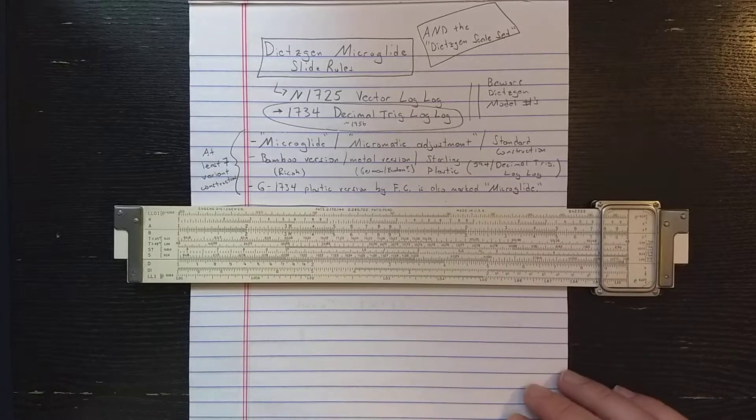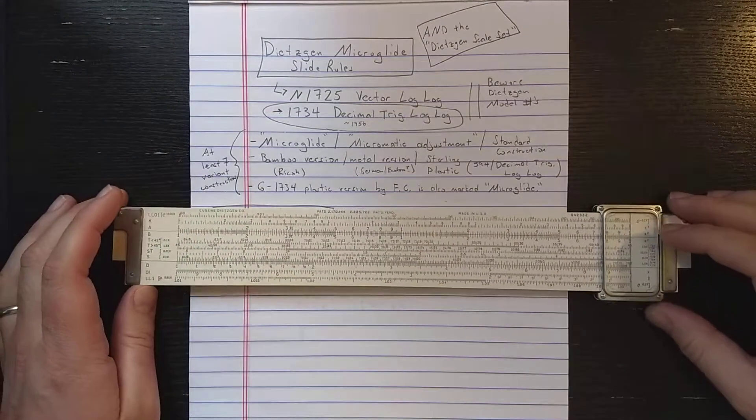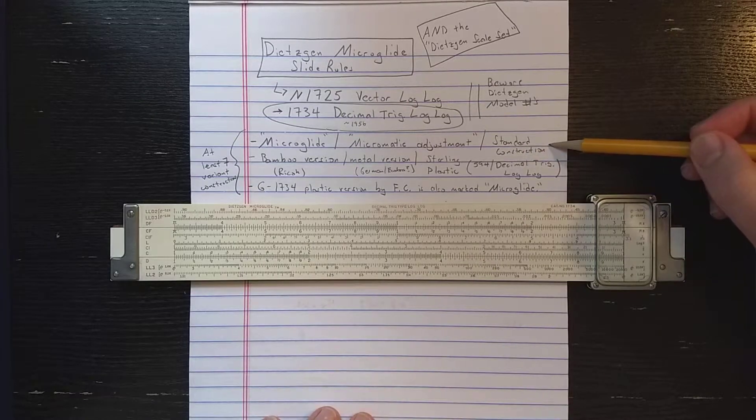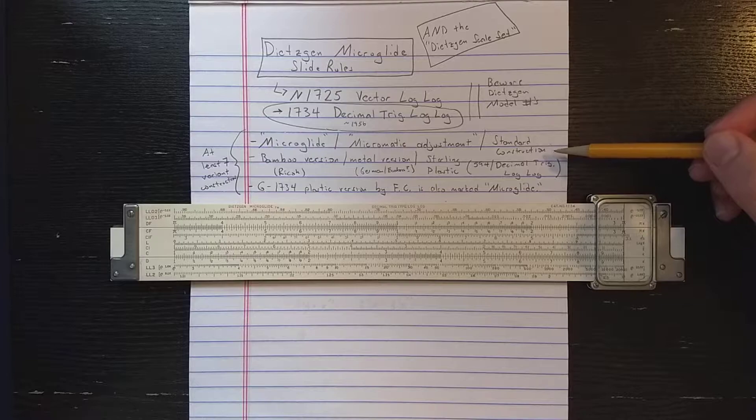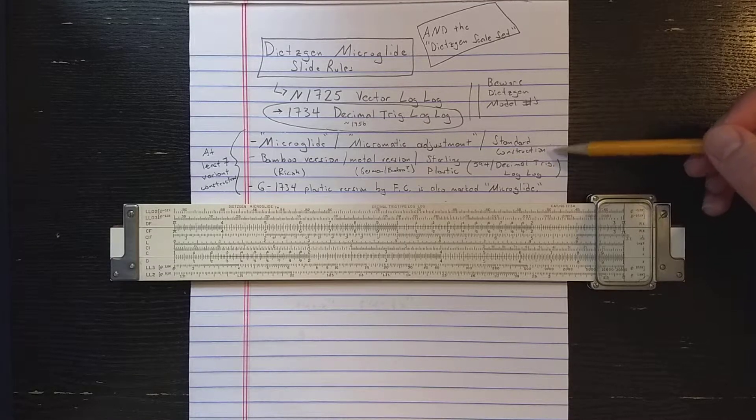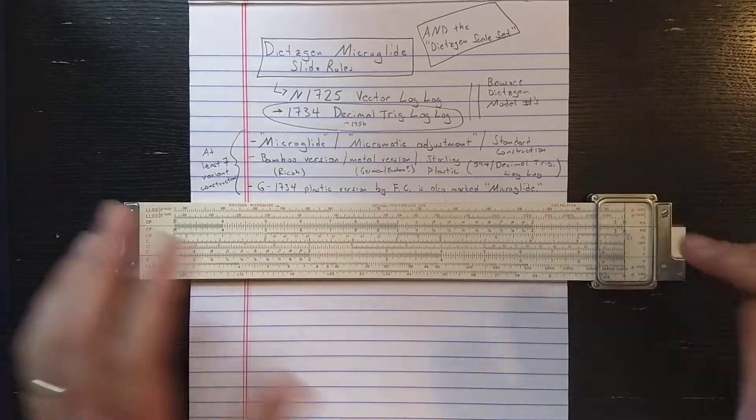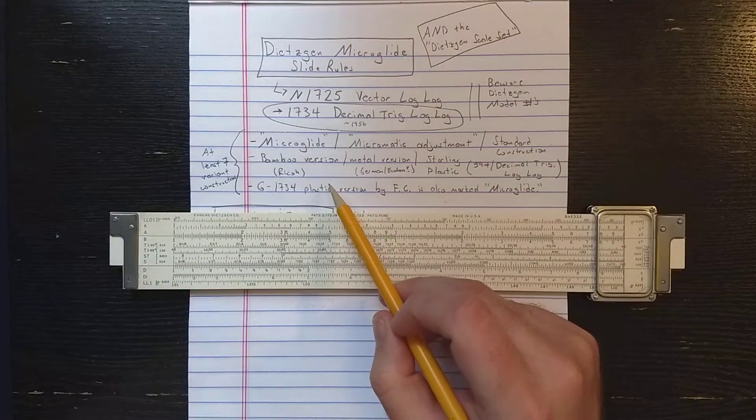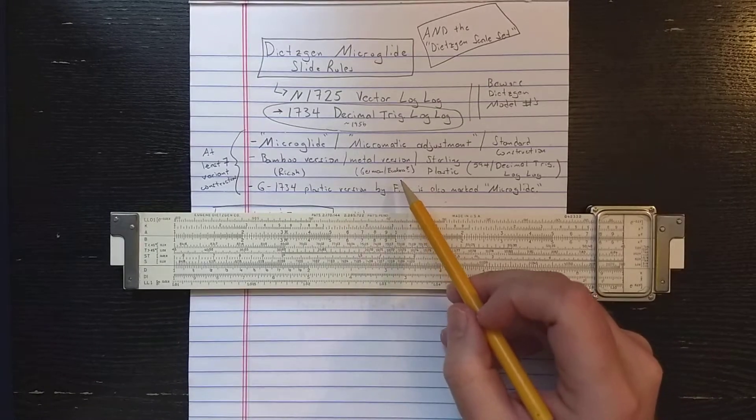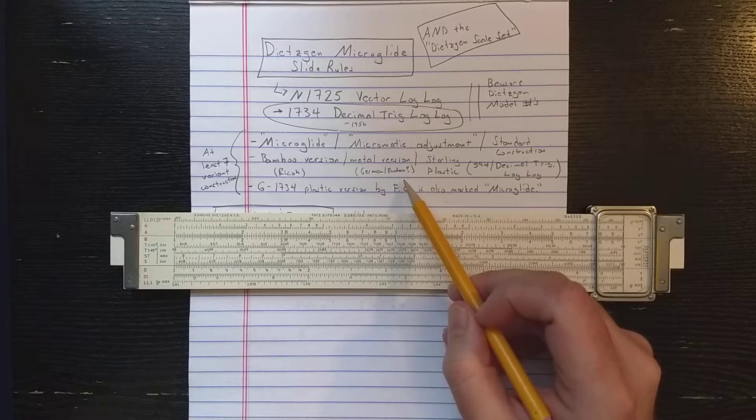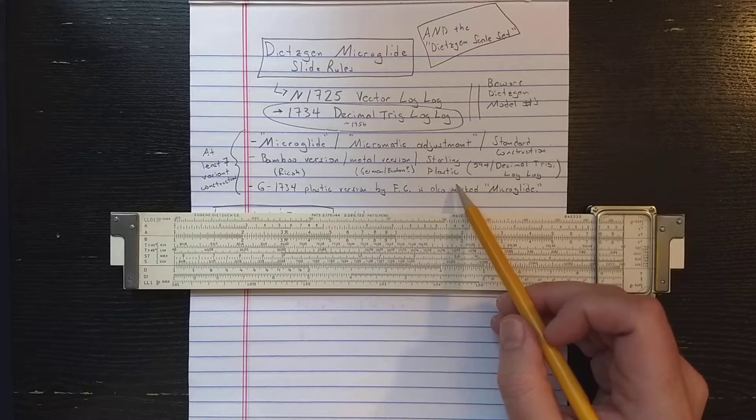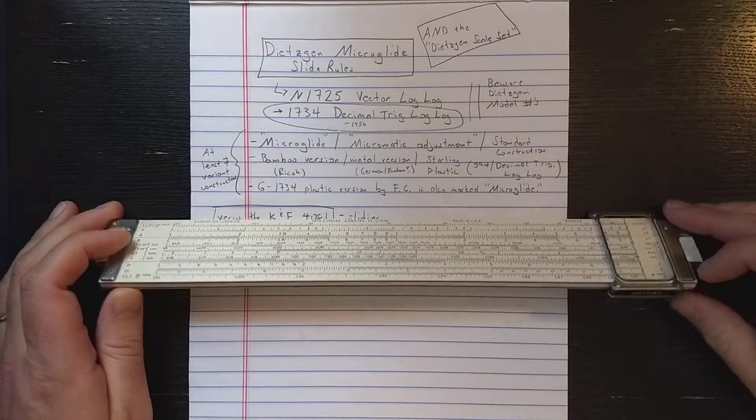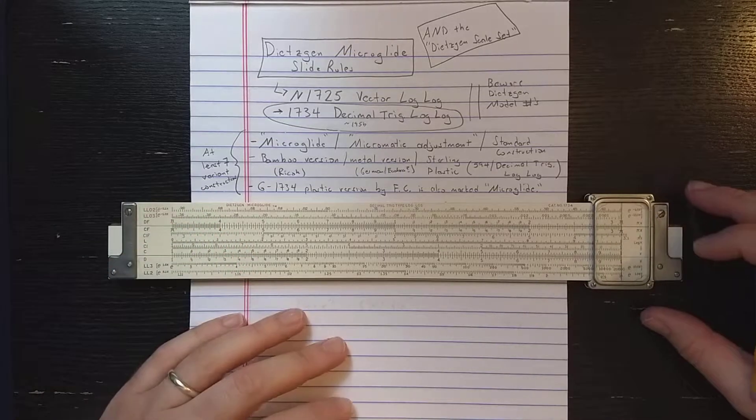You see the earlier micromatic slide rolls, you see the Dietzen 1734 here, a microglide slide roll with this scale set. You see they make a standard construction slide roll, I think it's a 1733. I have that in one of my other videos, a standard construction slide roll with this scale set. At a glance, it looks exactly the same as this slide roll. Later, Dietzen contracts a bamboo version from Ricoh, I think that's the B1734 for bamboo. There is a metal version made in Germany, maybe by Ecobra. There is a version made by Sterling Plastic Slide Rolls. It must be under license because it uses these exact designations on the ends, it's basically an exact copy, of course no color printing and complete plastic construction.